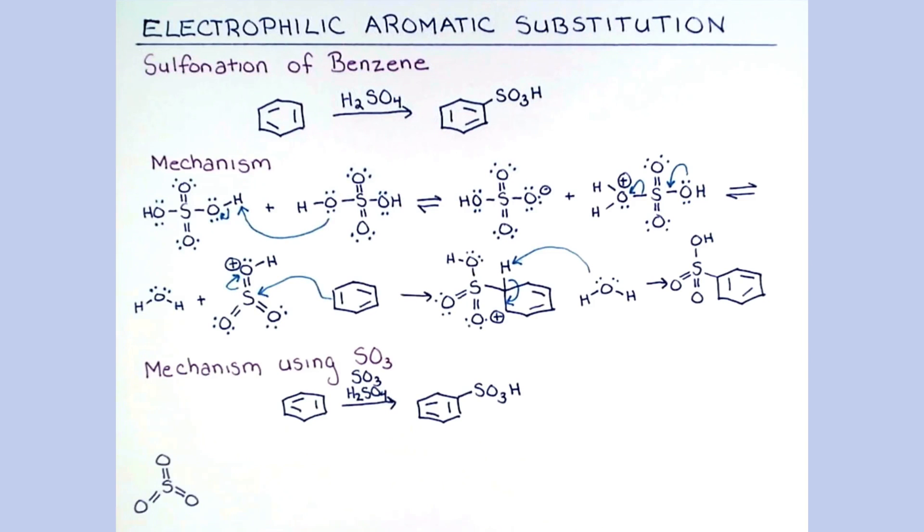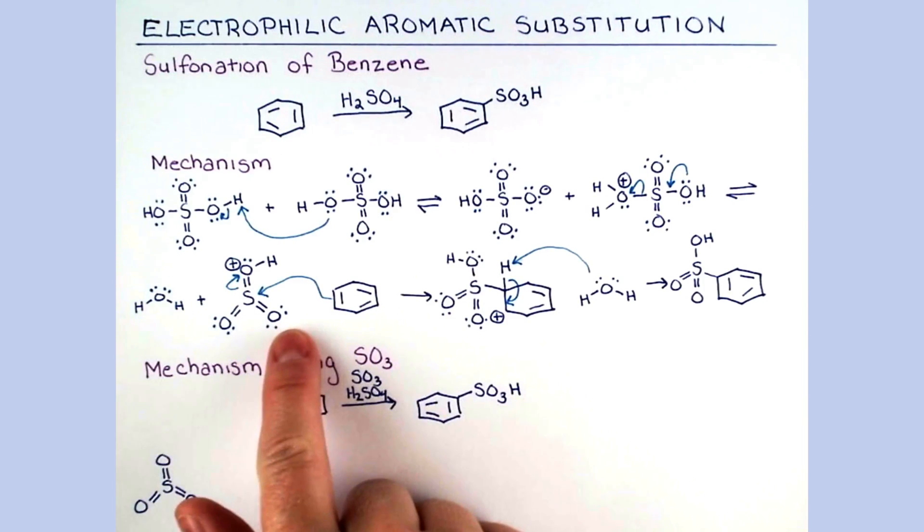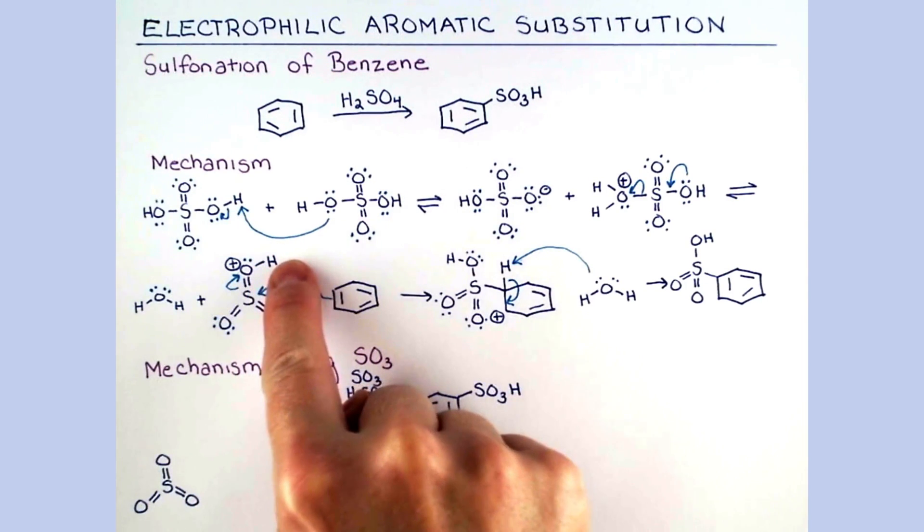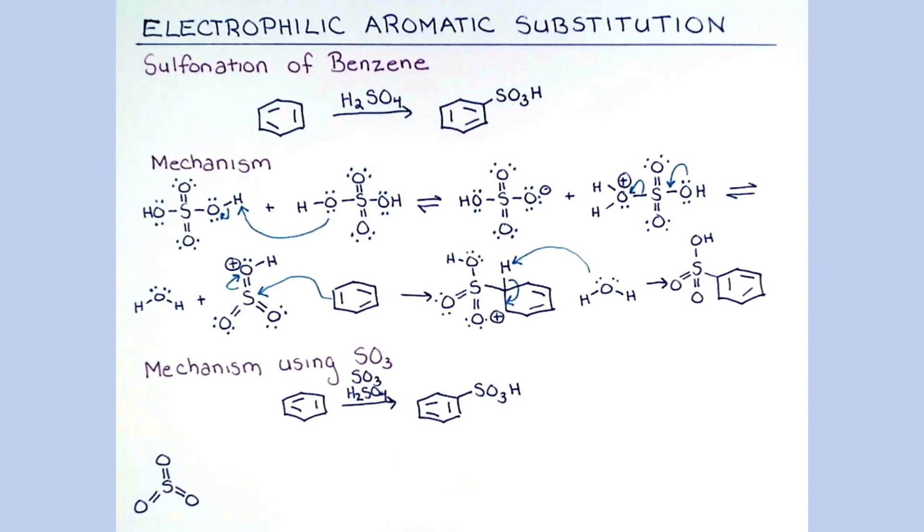This mechanism can be drawn a couple ways. Notice above we generated a protonated form of sulfur trioxide. Now the protonation of SO3 may be the first step in this reaction under certain conditions. However, benzene can also attack sulfur trioxide directly. And we'll show that mechanism here.